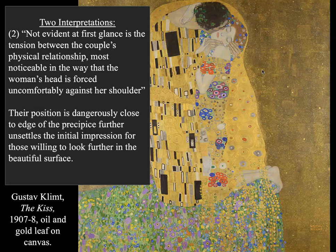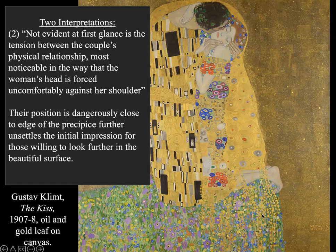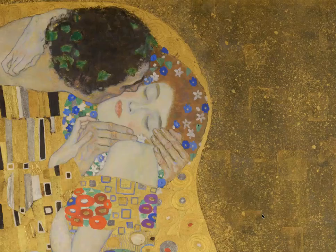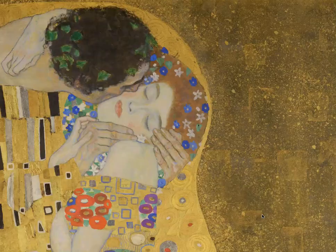However, I have also read interpretations that say not evident at first glance is the tension between the couple's physical relationship. Most noticeable is the way that the woman's head is forced uncomfortably against her shoulder. Their position is dangerously close to the edge of a precipice, which further unsettles the initial impression for those willing to look past the beautiful surface — suggesting she's not actually happy about it, but kind of trying to pull him away and looks uncomfortable. The interpretation still seems up for debate, and it kind of depends on whether you agree that there's something inherently uncomfortable about this painting.